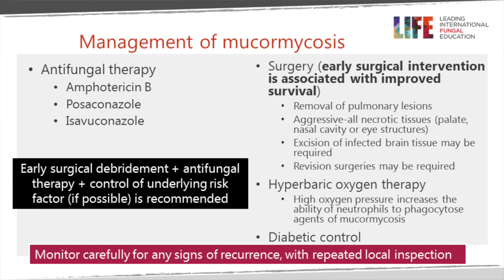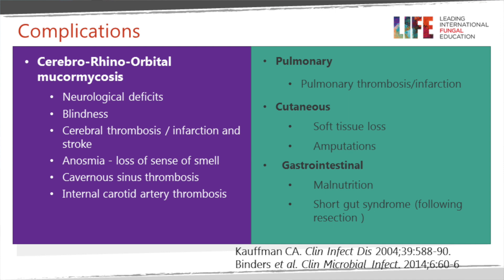Complications are formidable. In rhinocerebral disease: neurological deficits, blindness, stroke-like syndromes, loss of smell, cavernous sinus thrombosis, and internal carotid artery thrombosis. In the lungs, pulmonary thrombosis and infarction may progress during neutropenia or post-transplant. In cutaneous disease with extensive spread, early amputation of an affected limb should be considered; debridement plus antifungal therapy is used for trunk, neck, or face involvement. Survivors of gastrointestinal disease may develop short gut syndrome from extensive bowel resection.